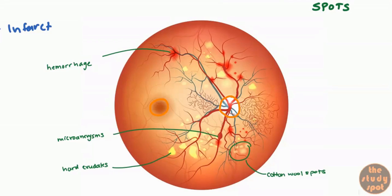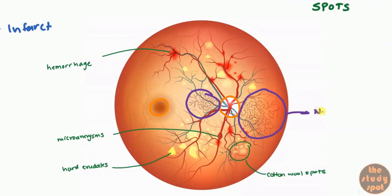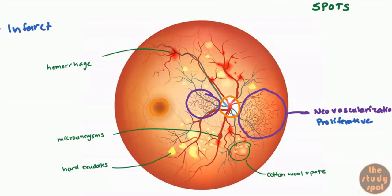If you notice this area here, you've got vessels that are very tortuous. This is neovascularization. This neovascularization is not part of non-proliferative diabetic retinopathy. As soon as you see this, it then becomes late stage or proliferative diabetic retinopathy. These tortuous vessel findings are very, very crucial — if you see this, you're no longer looking at early stage but at a later stage.